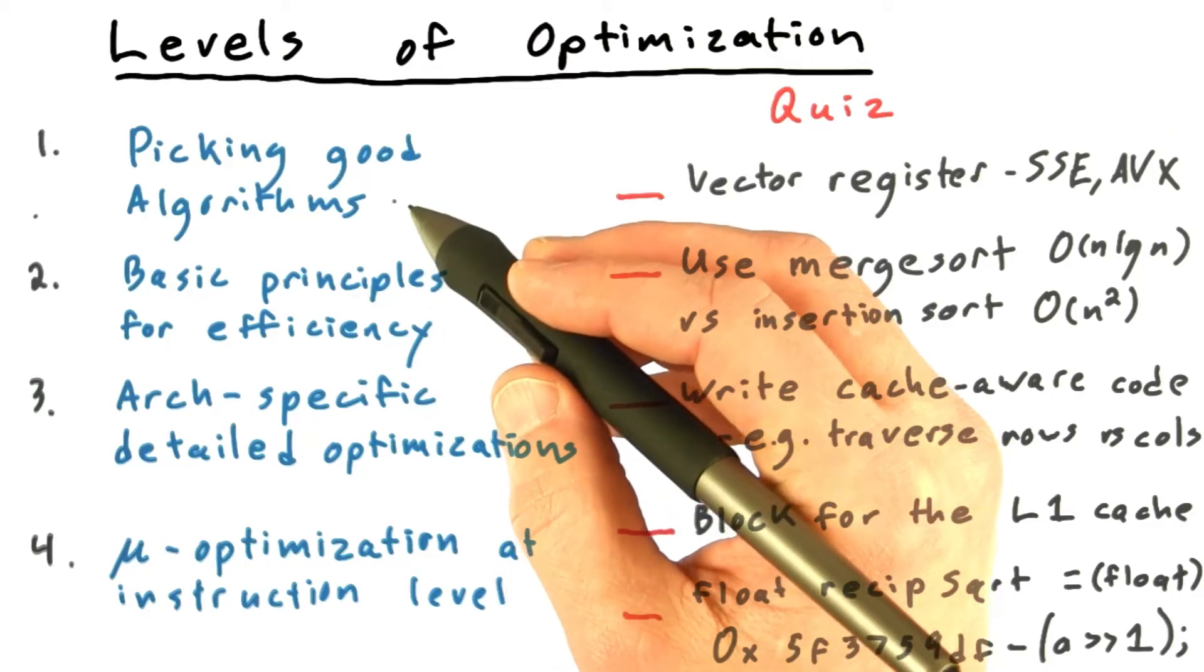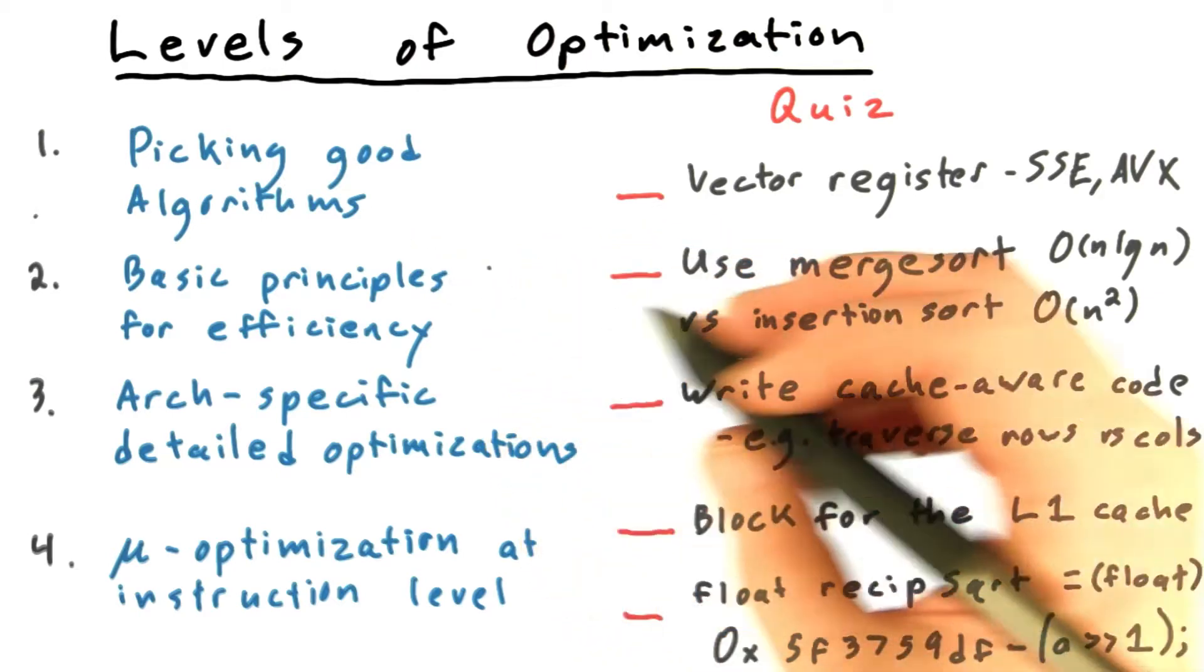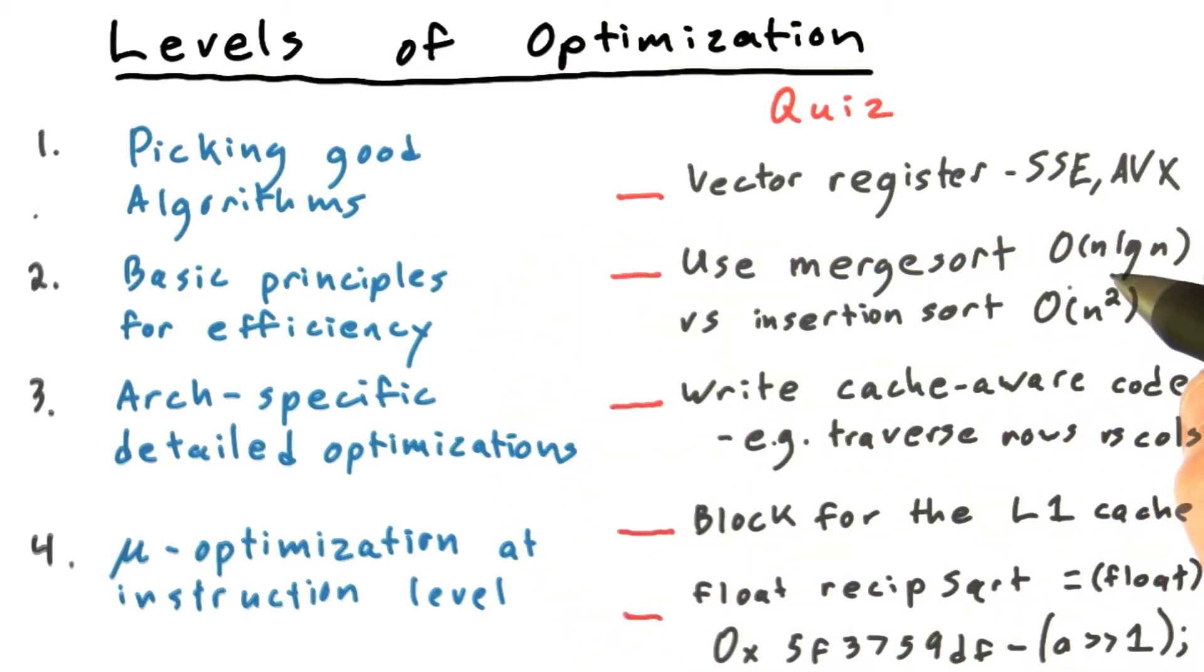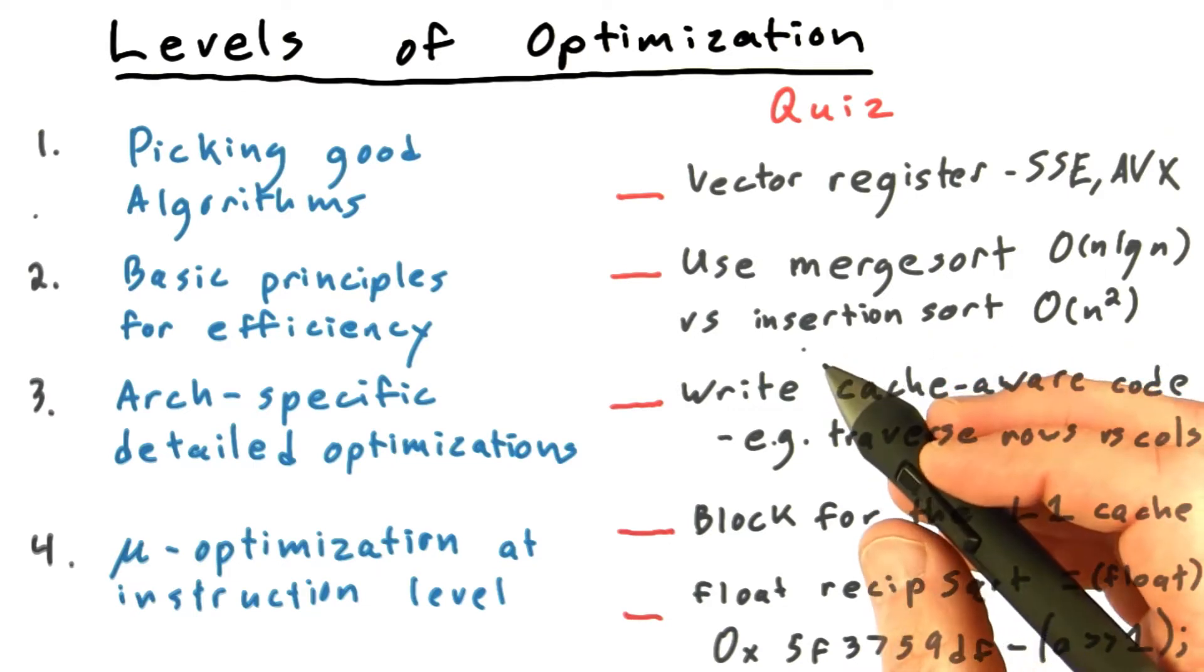All right, let's go through these. Picking good algorithms. Obviously, this is the most important level of optimization. When sorting a large random list, an O(n log n) algorithm like merge sort is just intrinsically going to be faster than an O(n²) algorithm like insertion sort. Clearly, this is a case of choosing the right algorithm.